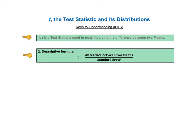KTU number 2 shows a descriptive formula for T. T is the difference between two means divided by the standard error.